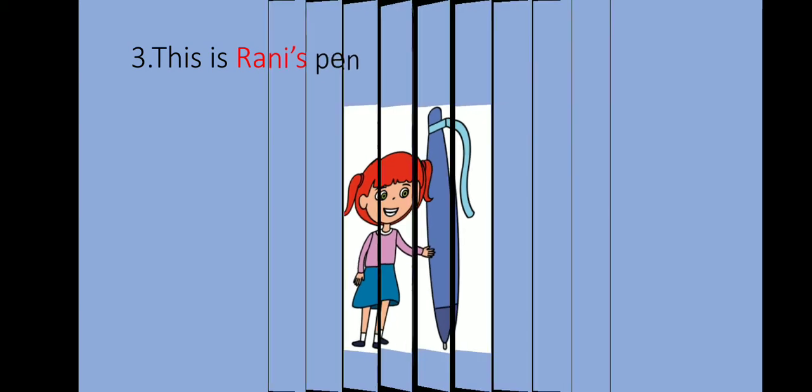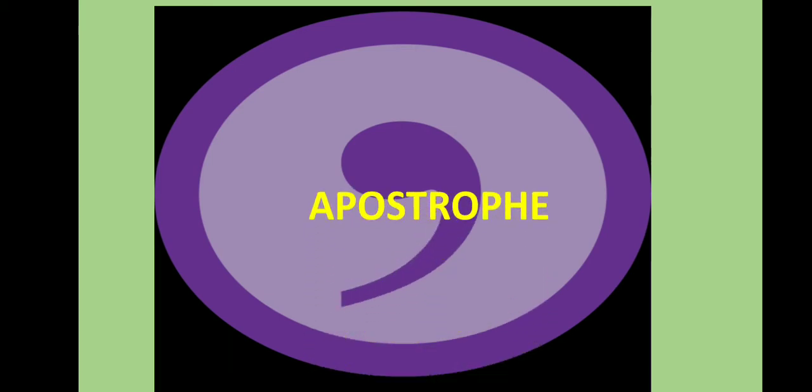Isn't it? See, are you observing this one? Yes, you observed this punctuation mark at the top of the nouns. Isn't it? So, this is called apostrophe.